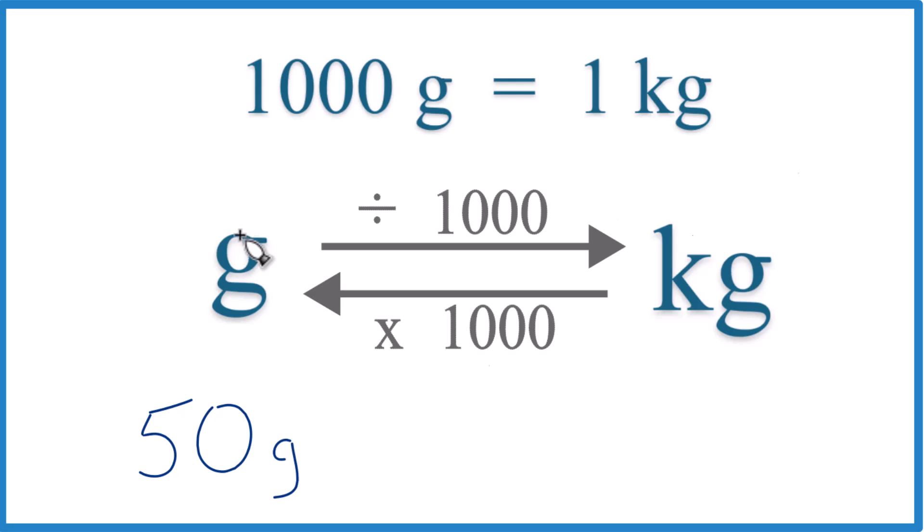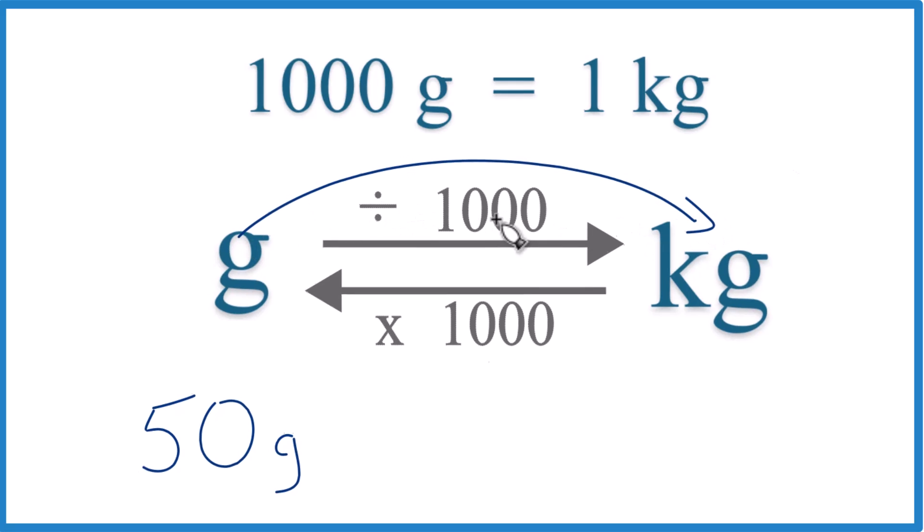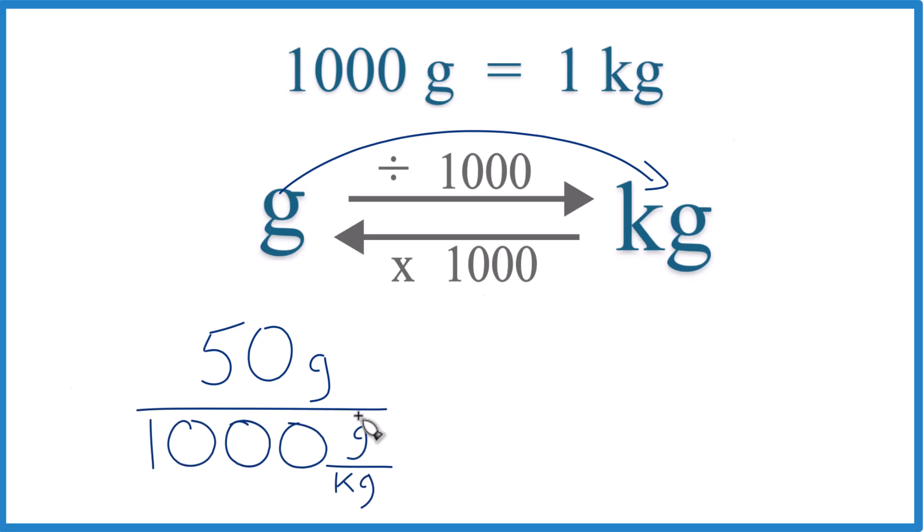So what we can do, we're going from grams to kilograms, we divide by a thousand, like this. And that's a thousand grams up here, and that's a thousand grams in one kilogram. That's our conversion factor.